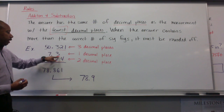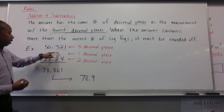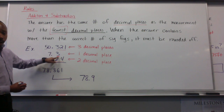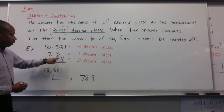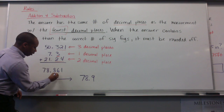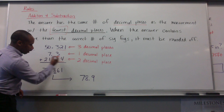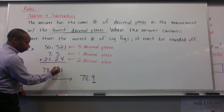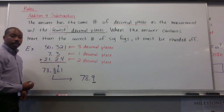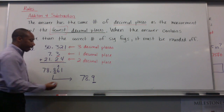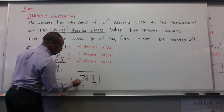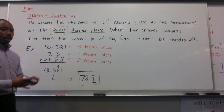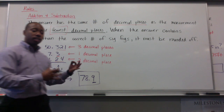My final answer has the same number of decimal places as the value with the fewest decimal places. This number only goes to this decimal place because 7.3 only goes to that decimal place. My final answer is 78.9 — I round up because 6 is higher than 5, so that becomes 9. Of course, we have some units associated with this because we are talking about measurements. This is addition and subtraction.